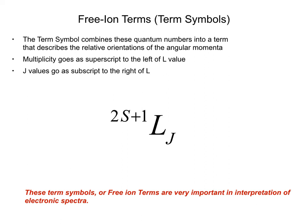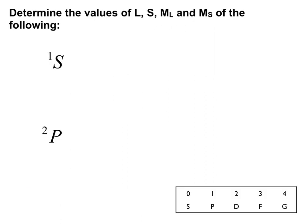The term symbol takes the following form: capital L is at the heart, with the spin multiplicity as a superscript to the left of L, and the J quantum number as a subscript to the right, if needed.